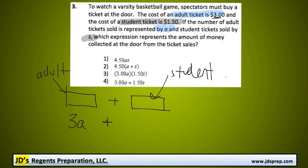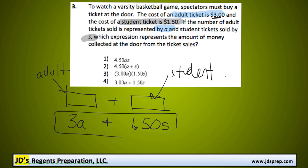And then the amount of money from the student tickets would be the price per ticket, which is $1.50, multiplied by the number of student tickets sold, which is our variable S. So that expression, 3A + 1.50S, represents the amount of money collected. We can see that matches option number four.